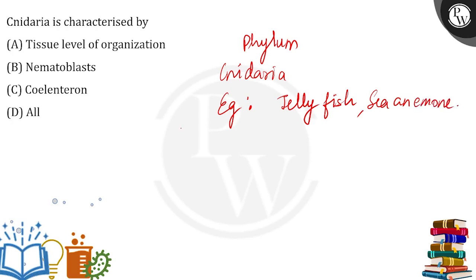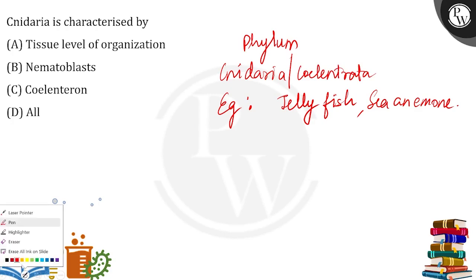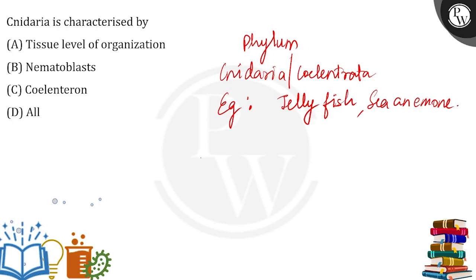Another name for Cnidaria is Coelenterata. Let's talk about the characteristic features of Coelenterata. Cnidarians have a true cavity called the coelenteron, and they are diploblastic.